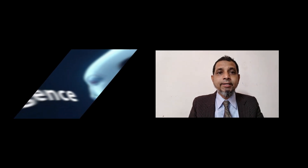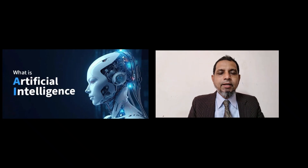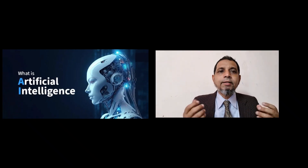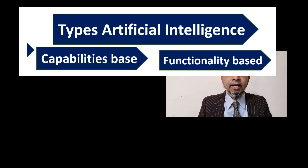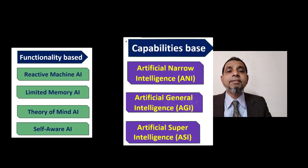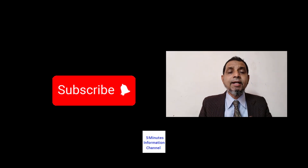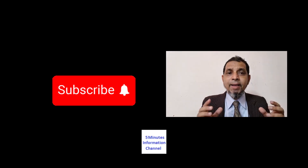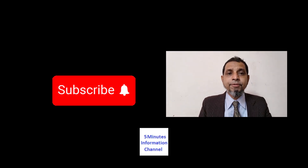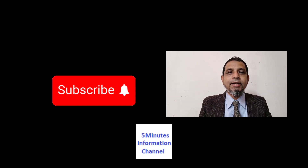To conclude, in this episode I discussed three points: number one, what is AI and its definition; number two, the real examples and usage of AI in our daily life; and number three, the different types of AI on the basis of functionalities and capabilities. That's the end of this episode — stay connected, I will be back soon with another informative episode. Don't forget to comment about this video. Thanks for watching!